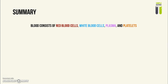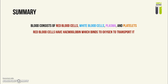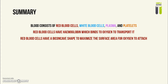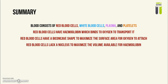To summarize: the blood consists of red blood cells, white blood cells, plasma, and platelets. Red blood cells contain hemoglobin, which binds to oxygen to transport it. They have a biconcave shape to maximize surface area available for oxygen to attach to, and they lack a nucleus, giving more volume for hemoglobin so that more oxygen can be transported.